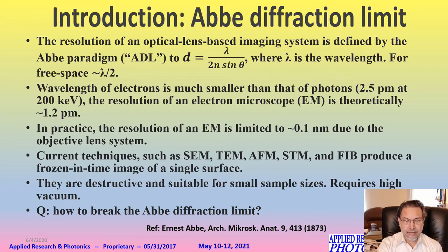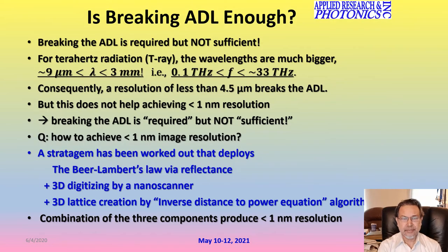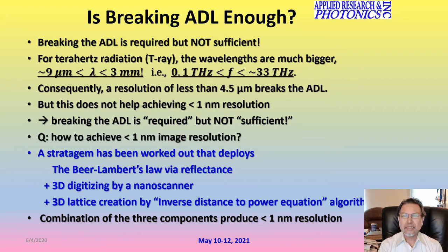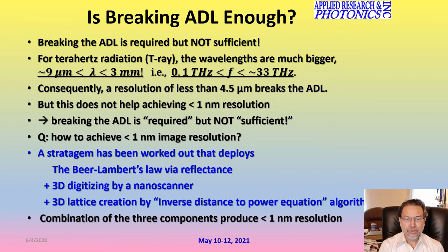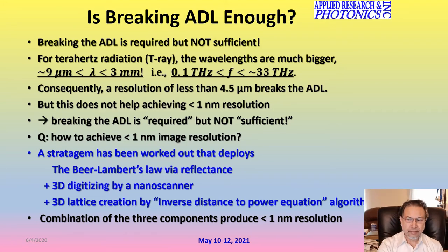The question to answer is: can we overcome the diffraction limit? An equally important question is, is overcoming the diffraction limit enough? And the answer is no. Because even using a UV of 256 nanometer wavelength, half of that — 128 nanometers — is not nearly enough to see the atomic phase lattice. So we came up with a strategy incorporating a nanoscanner, the principle of Beer-Lambert's law rewritten in terms of reflectance, and then using a computer algorithm to generate the image from the reflection matrix.